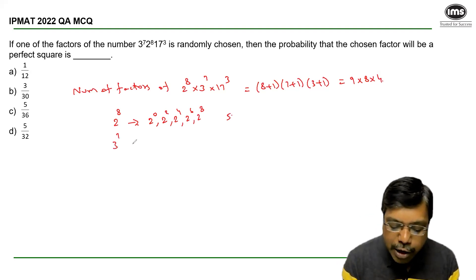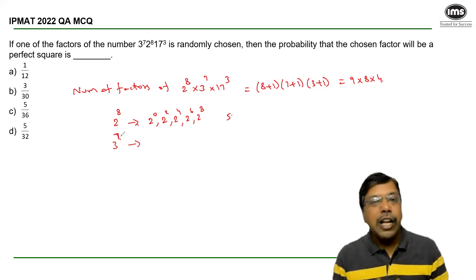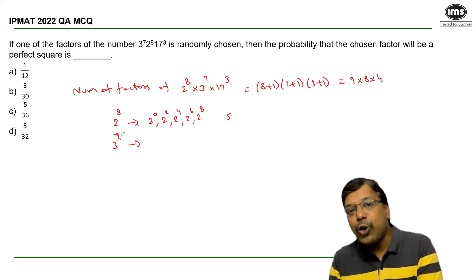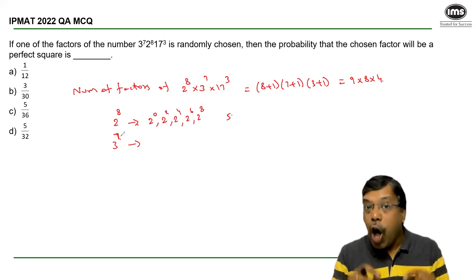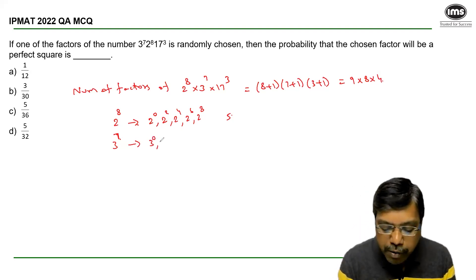Similarly, 3^7, different factors of 3^7 range from 3^0 to 3^7, of which the perfect squares will be 3^0, 3^2, 3^4 and 3^6.